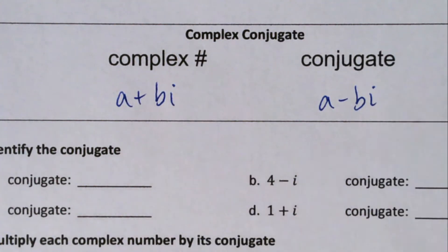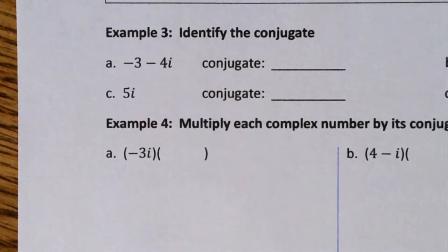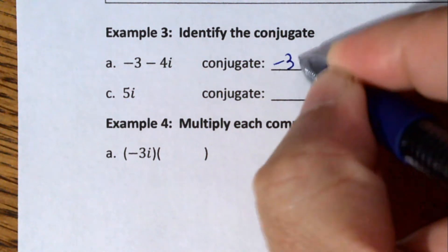Here we got -3 - 4i. The conjugate is -3 + 4i.